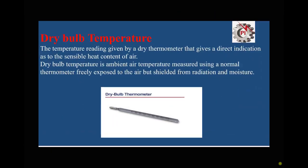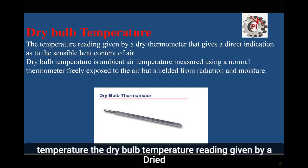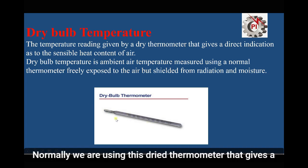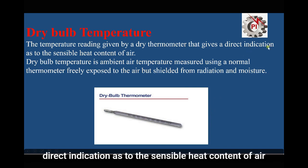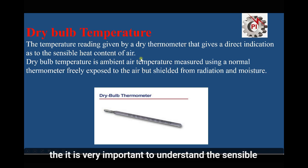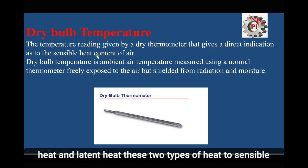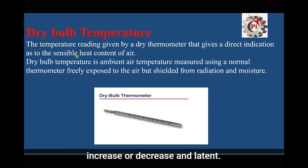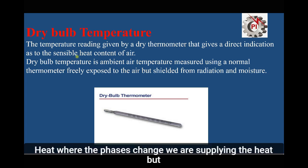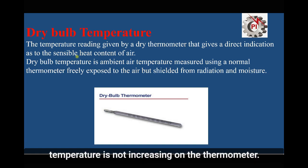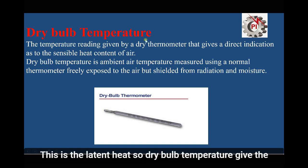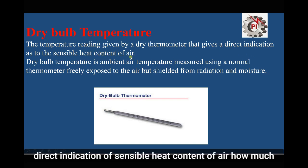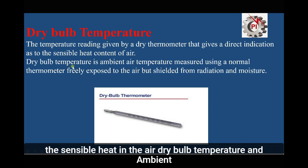The first property is dry bulb temperature — the reading given by a dry thermometer. This thermometer gives a direct indication of the sensible heat content of air. Sensible heat is when the temperature shown on the thermometer increases or decreases. Latent heat is where the phase changes — heat is supplied but temperature does not increase on the thermometer. Dry bulb temperature gives the direct indication of the sensible heat content of air.